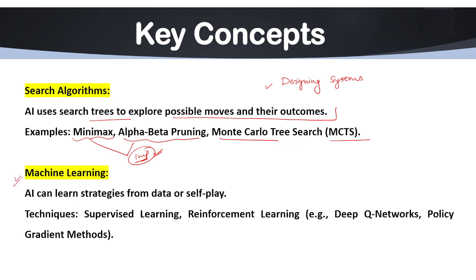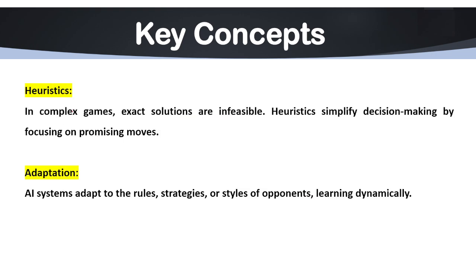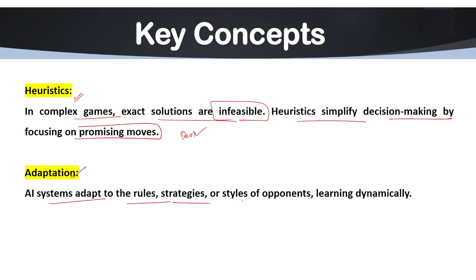Another key concept is machine learning. AI can learn strategies from data or through self-play, using techniques like supervised learning and reinforcement learning. Another key concept is heuristics — in complex games, exact solutions are infeasible, so heuristics simplify decision making by focusing on the most promising moves. Adaptation means AI systems adapt to the rules, strategies, or styles of opponents, learning dynamically.